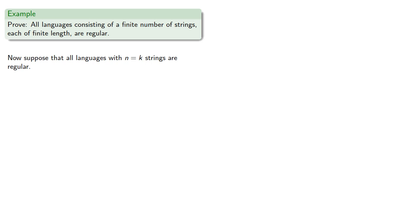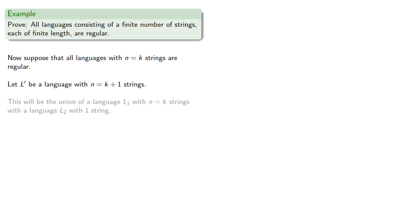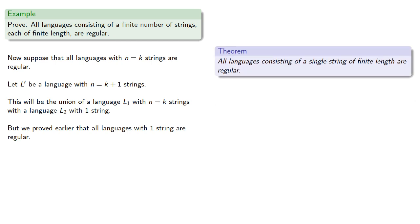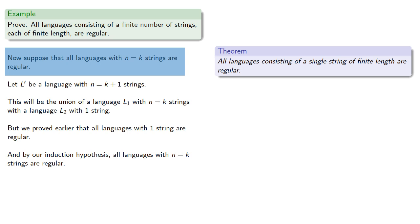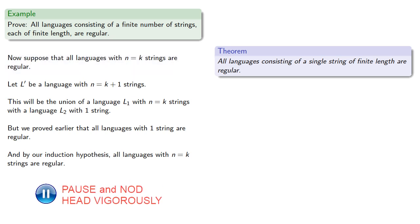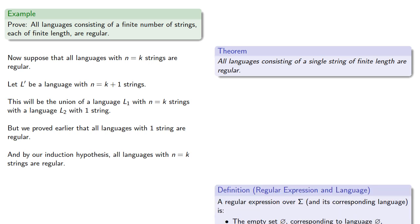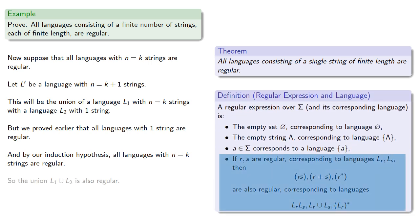Next, suppose that all languages with n equals k strings are regular, and let L' be a language with n equals k plus one strings. This will be the union of a language L1 with n equals k strings. We proved earlier that all languages with one string are regular, and by our induction hypothesis, all languages with n equals k strings are regular. And so the union of two regular languages is a regular language.